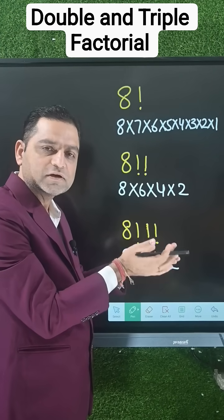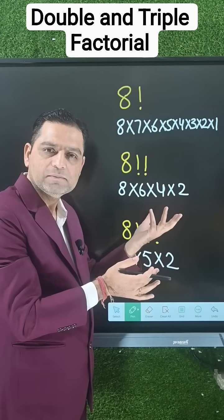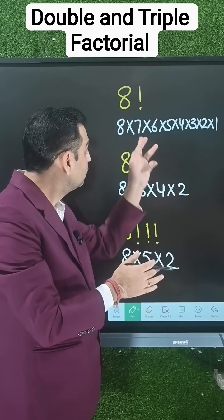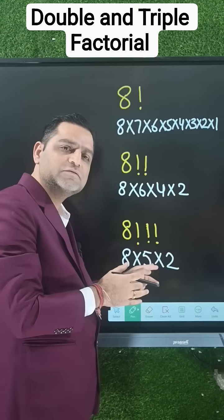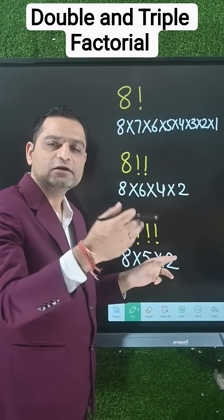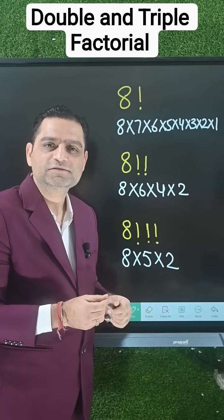You can try for 7 factorial — what will be the answer for all three types? Please write in the comment box. Thank you so much.